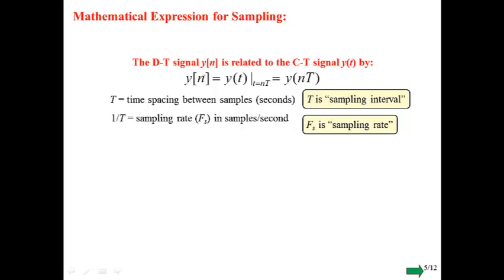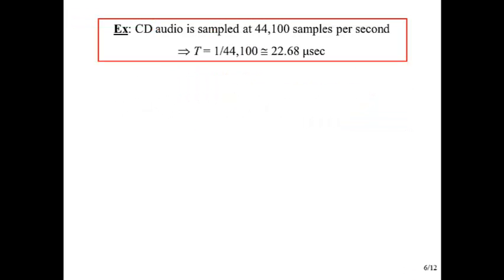We need a mathematical expression for this act of sampling. It's very easy. The sample at index n is just the time function—notice the square brackets versus parentheses. It's just the time function evaluated at t equal to nT, and it's easier to write it this way. Capital T is the sampling interval, and the reciprocal of that, which is in units of samples per second. That's a rate. How fast am I taking the samples? How many samples per second? There's a reason we use this symbol Fs, and we'll learn more about that later in the course.